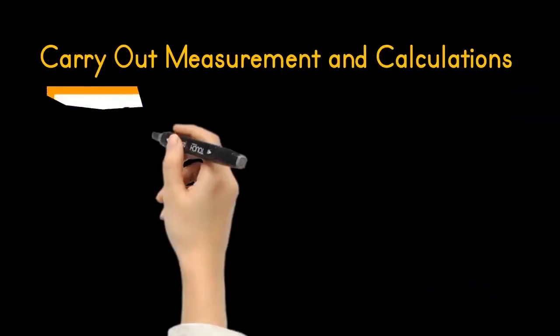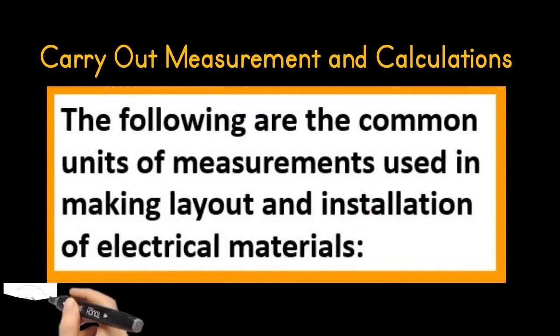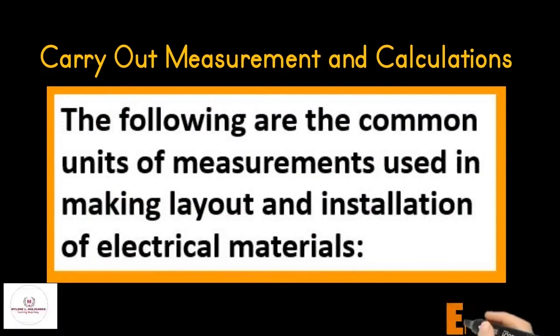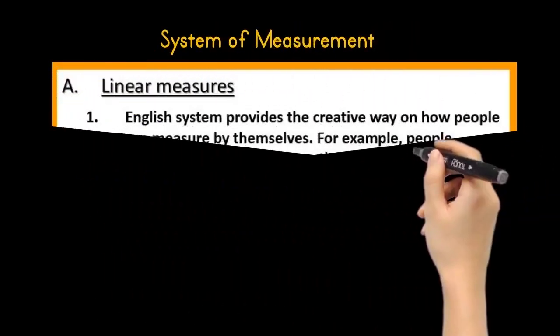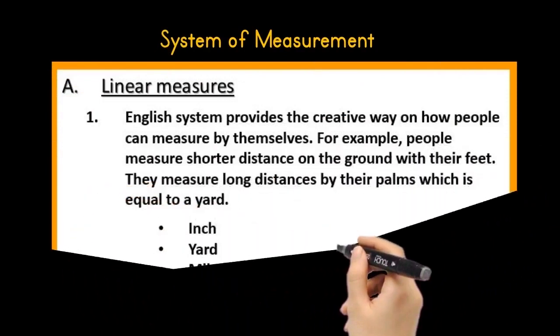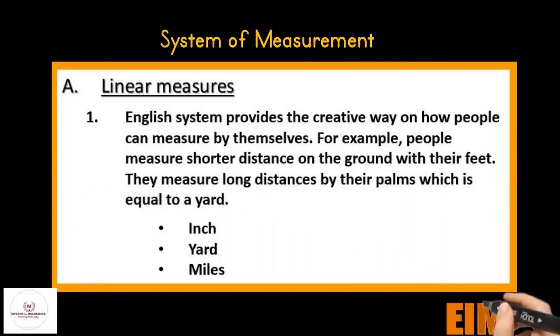The following are the common units of measurements used in making layout and installation of electrical materials. The first unit of measurement is linear measures. Number one is the English system. The English system provides a creative way on how people can measure by themselves. For example, people measure shorter distance on the ground with their feet. They measure long distance by their palms, which is equal to a yard. The English systems are the inch, the yard, and the miles.